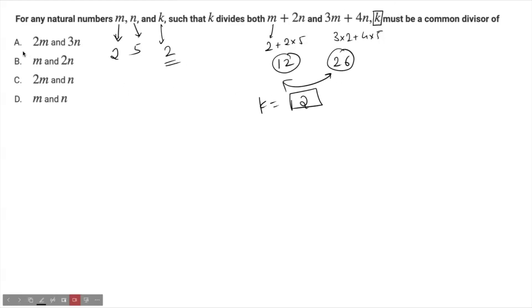The first option says 2m and 3n. 2m will be 2×2=4, 3n will be 3×5=15. These are the two values as per option A. As per option B, m and 2n will be m=2 and 2n=2×5=10.